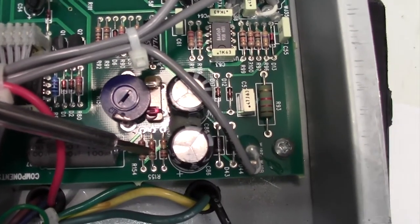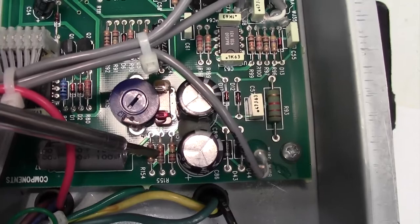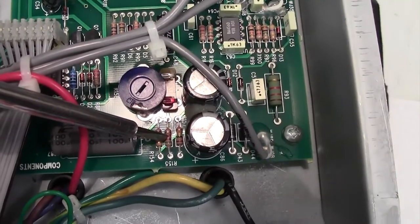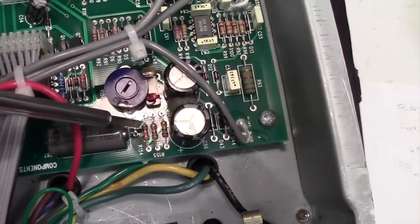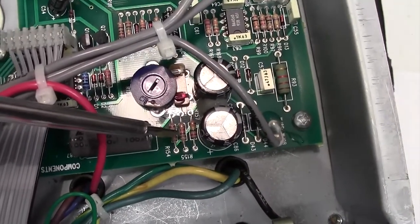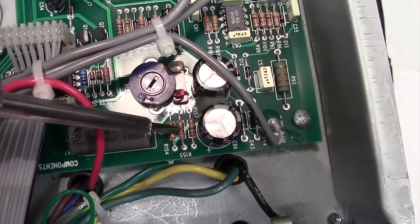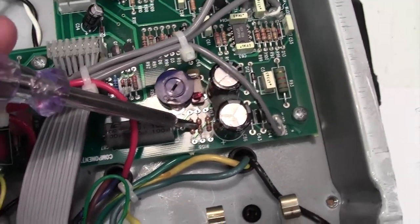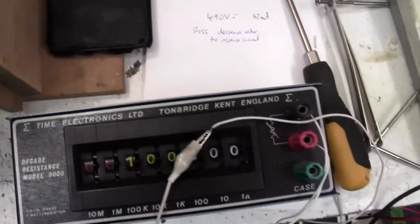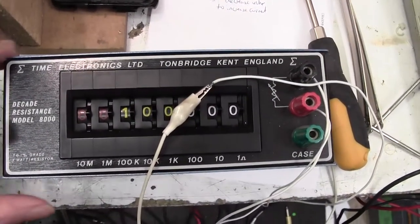One way you can do that is to put some croc clips on and then hot swap some resistor values until you get what you want. This resistor looks to be 51k, so I would start with 100k across there and see what happens. Now I have another secret weapon here which I'll show you, which is my decade resistance box.